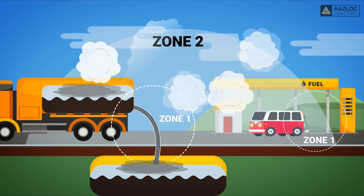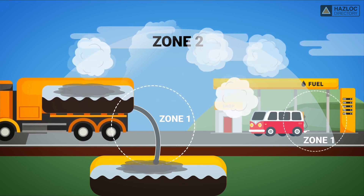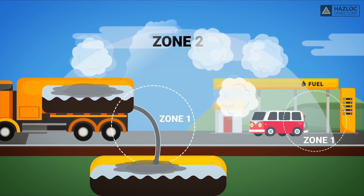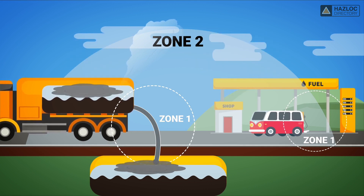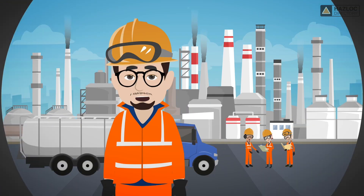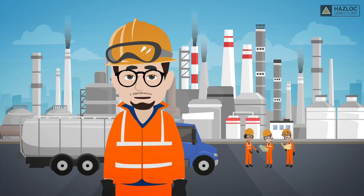Under normal operating conditions, there would be no gas present outside the tank. If gas leaks out of the tank due to an accidental rupture, repair, or maintenance, however, a hazard exists. Gas leaking out would create a hazard if the equipment installed inside fails or operates in an abnormal manner. The probability of the occurrence of an ignitable concentration is rare, and if one occurs, it only persists for a short period.